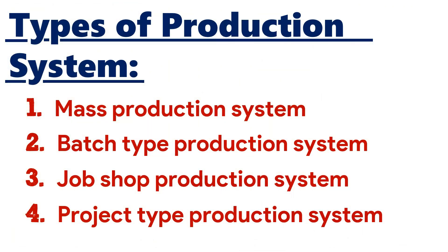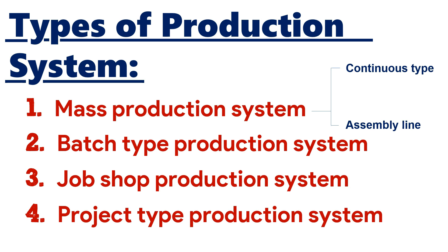There are four types of production systems: mass production system, batch type production system, job shop production system, and project type production system. Within mass production, there are further two types: continuous type production system and assembly line production system.